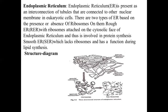Endoplasmic reticulum is present as an interconnection of tubules that are connected to the nuclear membrane in eukaryotic cells. There are two types based on the presence or absence of ribosomes. Rough ER (RER) has ribosomes attached on the cytosolic face and is involved in protein synthesis. Smooth endoplasmic reticulum (SER) lacks ribosomes and functions in lipid synthesis.